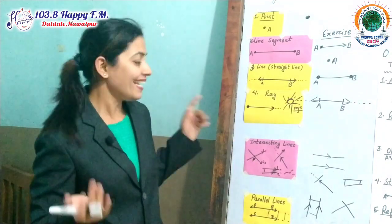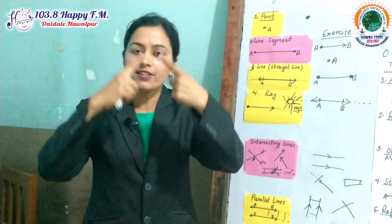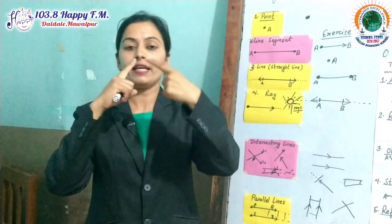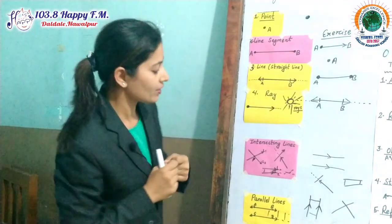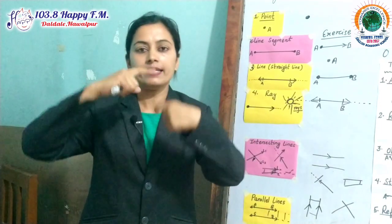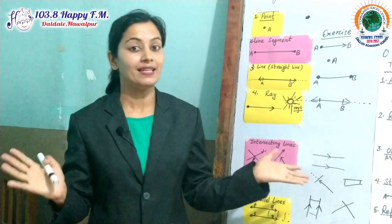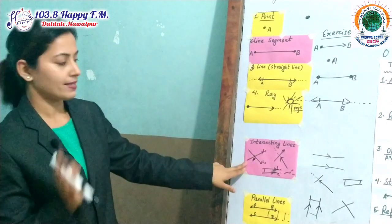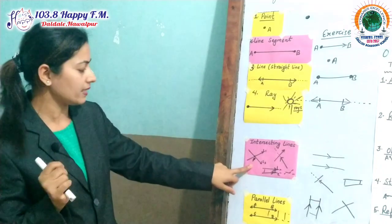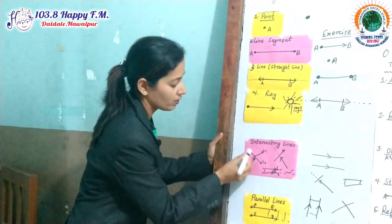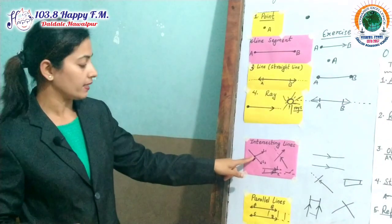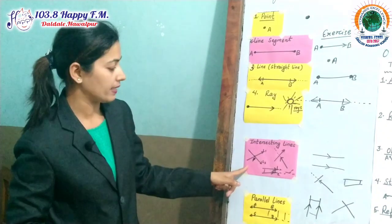The next topic is intersecting lines and parallel lines. Intersecting line means when two lines cross, meet, and intersect each other — that is an intersecting line. You can see the figure here. This is an intersecting line because the two lines intersect at point P. This is line 1 and this is line 2; they intersect at point P. That's why it is called an intersecting line.